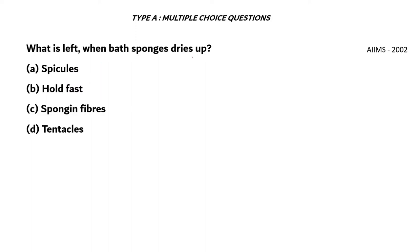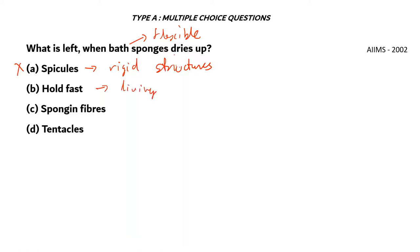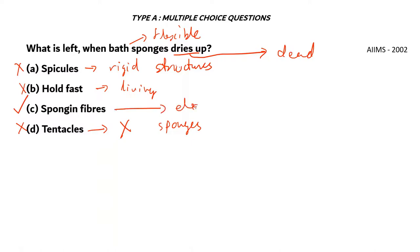Next question. What is left when bath sponges dry up? A. spicules, B. holdfast, C. spongin fibers, D. tentacles. Option A, spicules, is incorrect — spicules form rigid bony structures, while bath sponges are flexible. Option B, holdfast, is a living structure but the dried sponge is dead. Option D is incorrect — there are no tentacles in bath sponges. The right answer is option C, spongin fibers. These are the elastic fibers found in bath sponges, which is why they are used for cleansing.